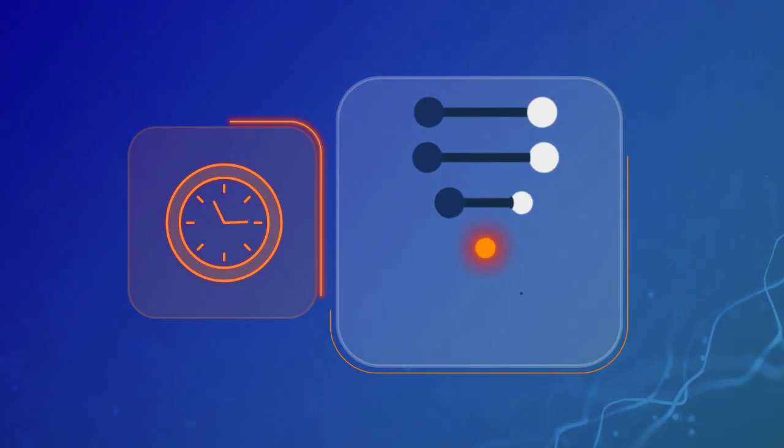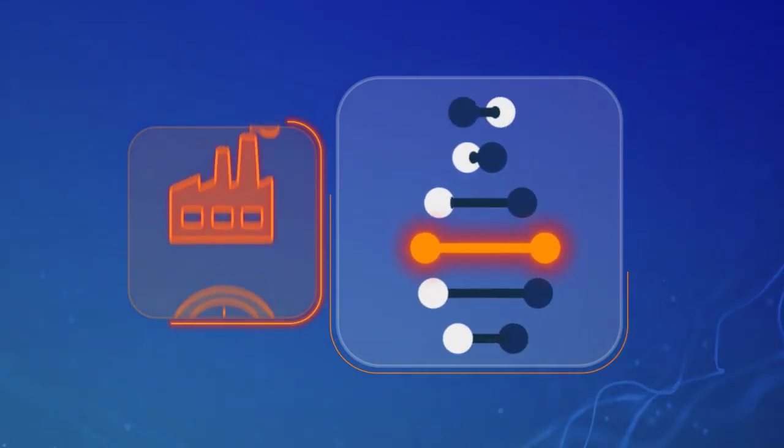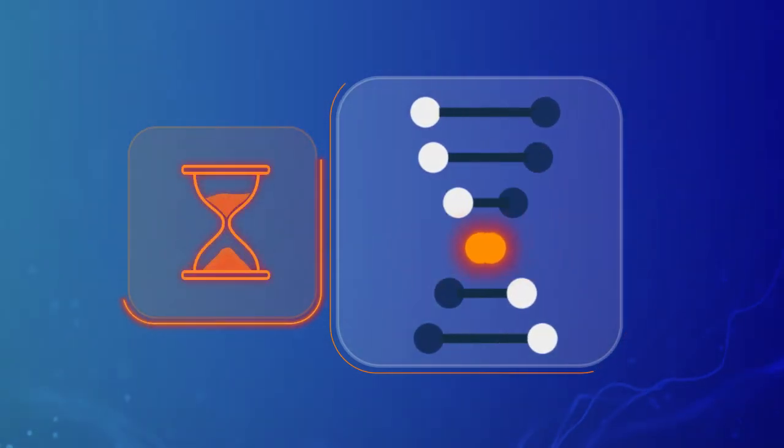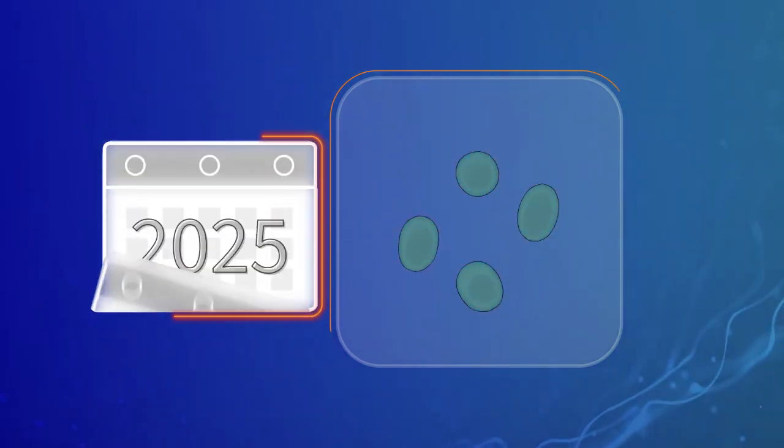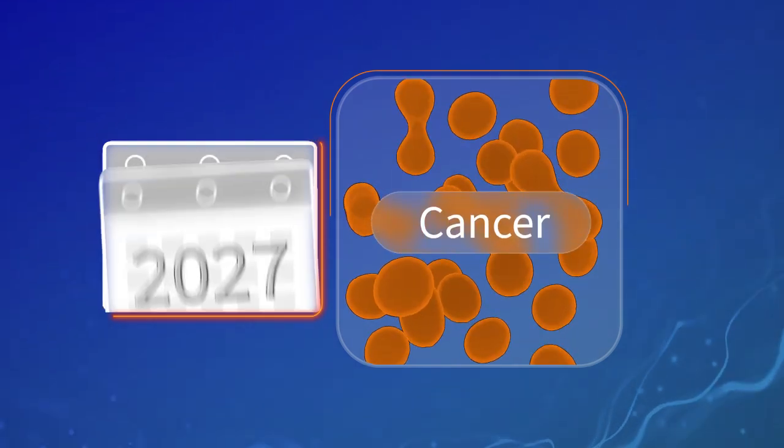Most of the time, DNA variants are acquired over a lifetime due to environmental exposures, the aging process, or even by chance. It can take years for these variants to accumulate in cells and cause a cancer.